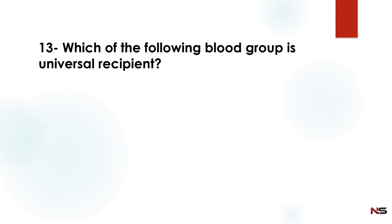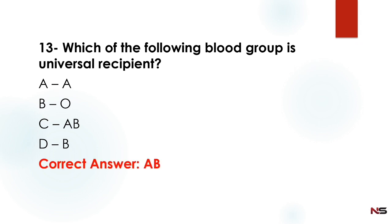Which of the following blood groups is the universal recipient? Option A: A, Option B: B, Option C: AB, Option D: B. The correct answer is AB — the AB blood group is the universal recipient.